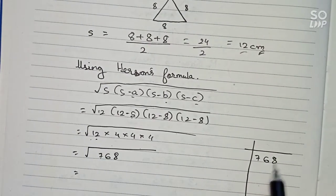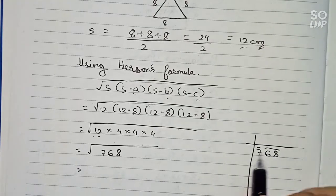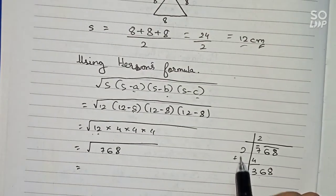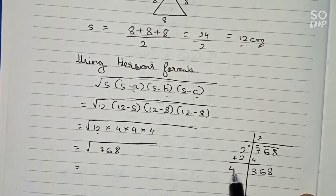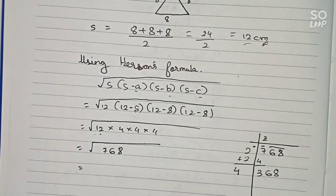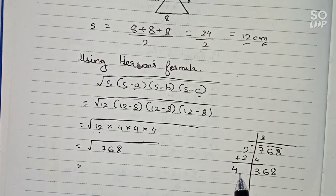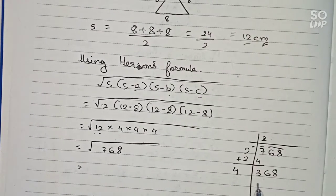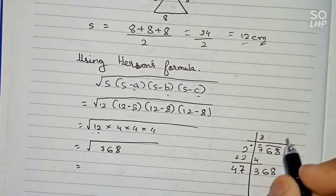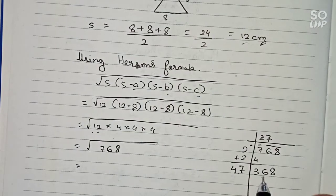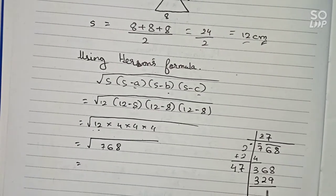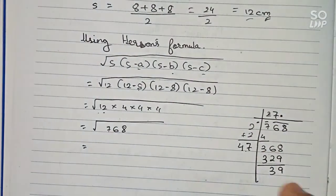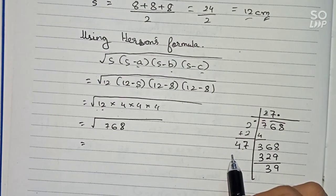Finding square root of 768 by the long division method: we pair the digits — 7 and 68. First two twos make 4, and 3 gives us 368. We need a number such that, when added to the current divisor and multiplied, it gives the closest result. That number is 7, so 47 times 7 gives 329, and the remainder becomes 39.